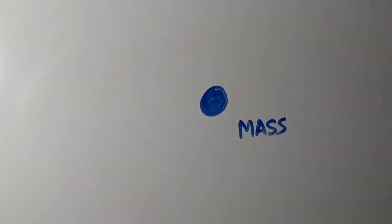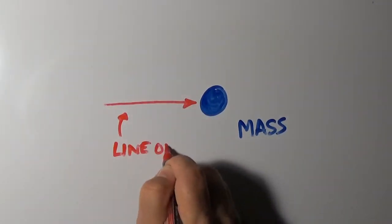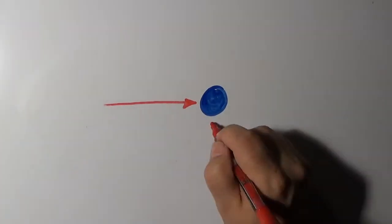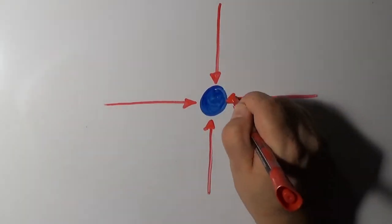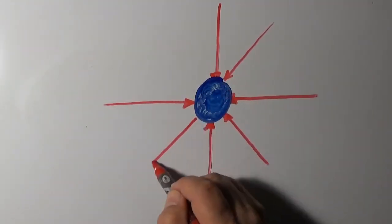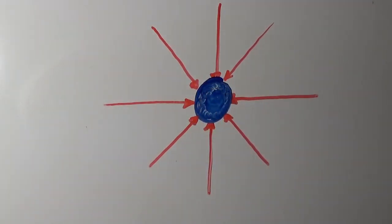Suppose we have some mass and want to draw a picture of its gravity. We can draw lines of force that show the direction that gravity pulls you. Gravity fills all of space, so there are lines coming from every direction. More massive objects have more gravity, so there are more lines of force.